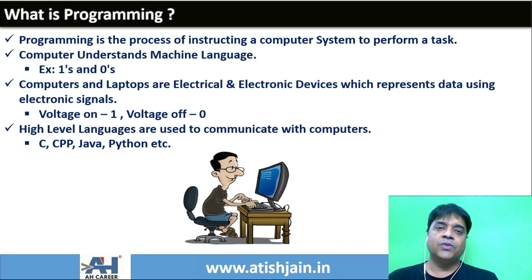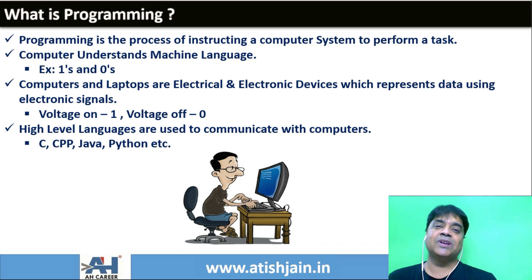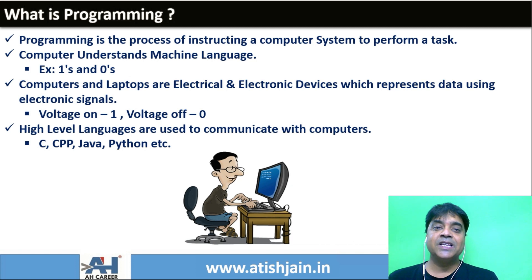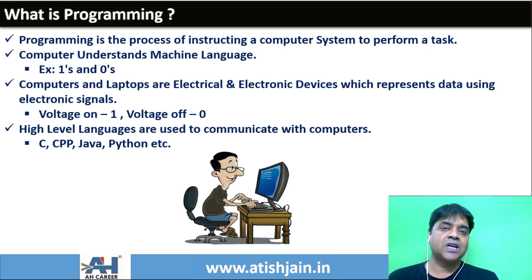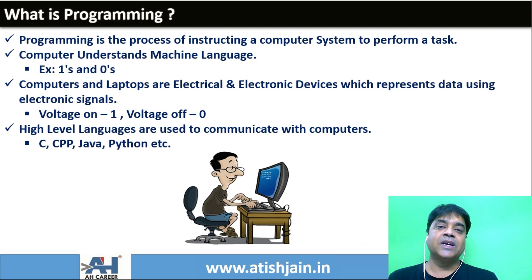When you store a number or a character, the computer memory stores it using ASCII codes in binary form. For example, if you store the name 'Abhi', the first character 'A' is converted to its ASCII code in binary form and stored in computer memory. Every single task requires replacing information with machine language codes.